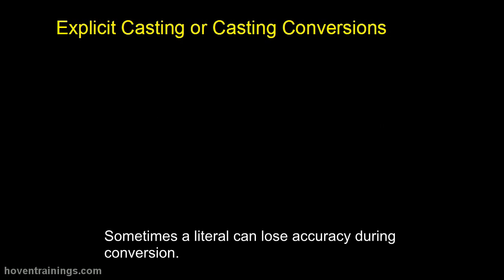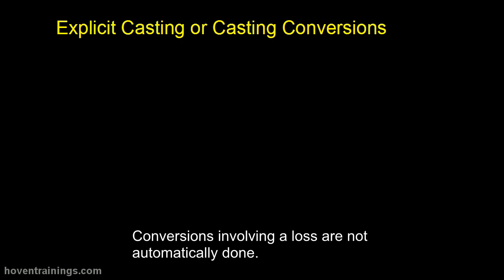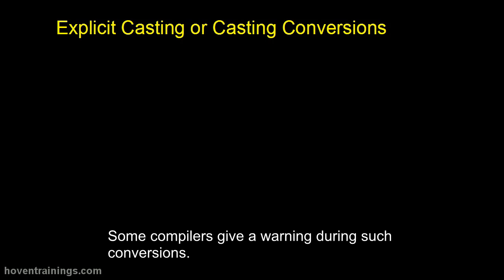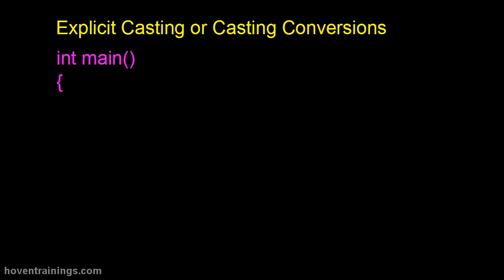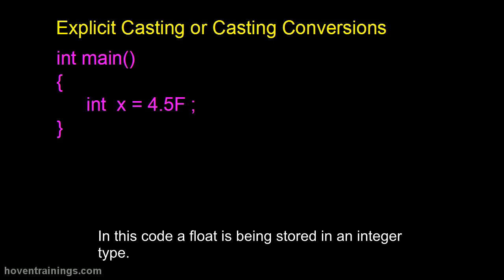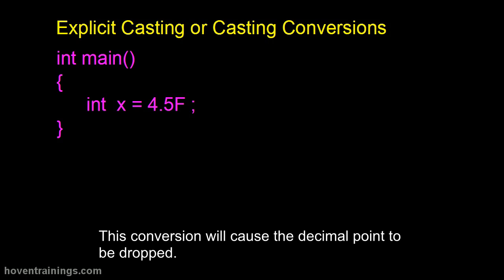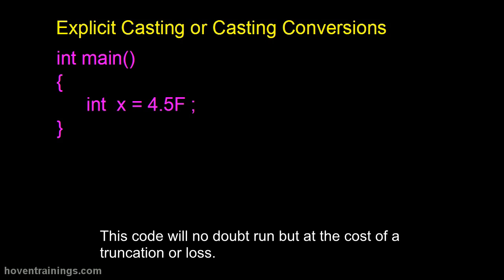Sometimes a literal can lose accuracy during conversion. Conversions involving a loss are not automatically done. Some compilers give a warning during such conversions. In this code a float is being stored in an integer type. This conversion will cause the decimal point to be dropped. X will get 4. This code will no doubt run but at the cost of a truncation or loss.